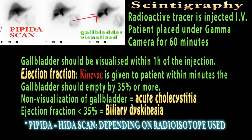Nuclear medicine, or scintigraphy, is a very important tool. The patient is given a radioactive tracer and placed under a gamma camera for one hour. The gallbladder should be visualized within one hour of injection of the isotope or tracer, and the ejection fraction should be 35% or more. Non-visualization of the gallbladder indicates acute cholecystitis, and an ejection fraction less than 35% means the patient has biliary dyskinesia.